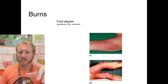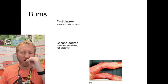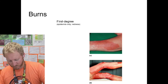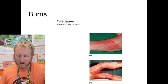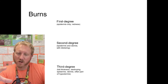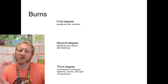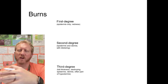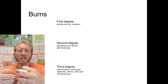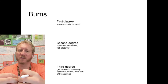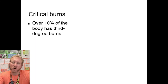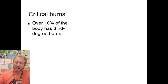First degree burns show only redness; second degree shows blistering; third degree involves extensive damage — the dermis and epidermis are destroyed and often part of the hypodermis as well — creating huge openings for infectious pathogens to enter directly into the bloodstream. It's very difficult for the body to mount a defense when infection enters this way. Critical burns are defined as third degree burns over more than 10% of the body.